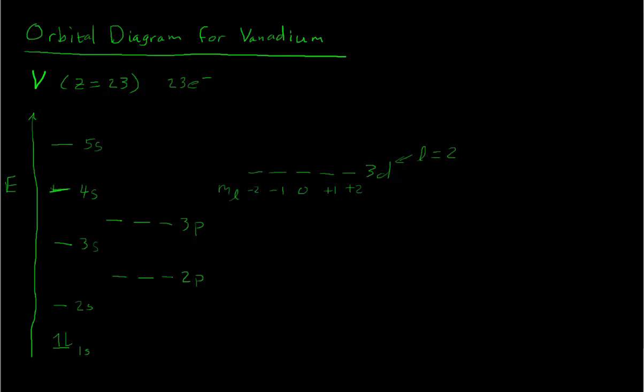So now the Aufbau principle says we put another electron spin up. Pauli principle says we can put another electron in that same box, spin down, and we can't put any more electrons there.